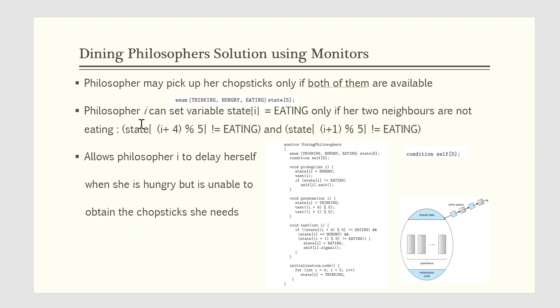The philosopher can set the variable state of i as eating only if her two neighbors are not eating. That is, state of i plus 4 mode 5 is not eating and state of i plus 1 mode 5 is not eating. We also need to declare condition self of 5. This allows the philosopher i to delay herself when she is hungry but is unable to obtain the chopsticks she needs.